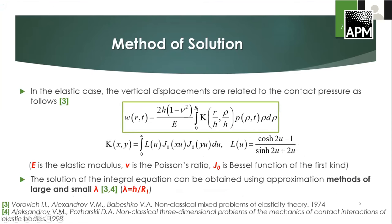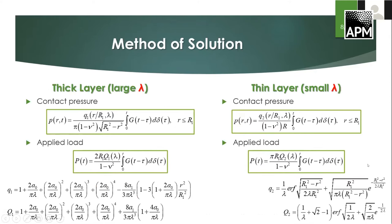In the elastic case, the vertical displacement of the layer boundary is related to the contact pressure as follows. E is the elastic modulus, mu is the Poisson's ratio, and J is the Bessel function of the first kind. Inside the contact region where W is known, we have an integral equation for the contact pressure. To solve this equation, we can use approximation methods of large and small lambda, where lambda is the parameter equal to the ratio of the layer thickness and the cylinder radius. These methods are described in detail in the works of Varovic and Aleksandrov.